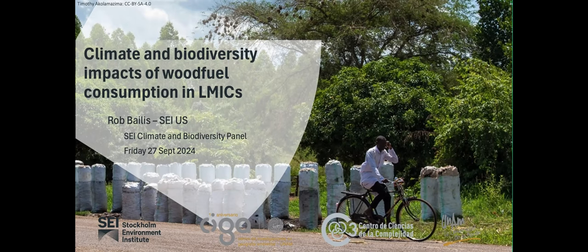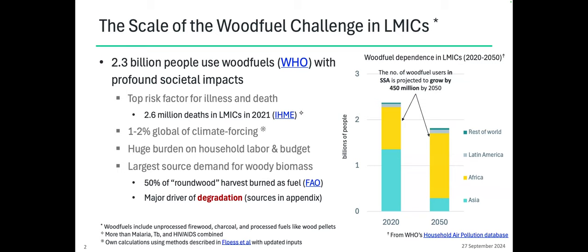I'll give a little bit of background. This is something I'm steeped in, but I know not everybody thinks about this every day. I'll go through some background information, talk about the scale of the wood fuel challenge in low and middle income countries, and then go into how this relates to climate change, land degradation, and impacts on biodiversity. Globally, throughout all low and middle income countries, about 2.3 billion people use wood fuels, and this has profound impact on society in many ways. When I say wood fuels, I mean people using unprocessed firewood, using charcoal — which is carbonized wood — and then to a much lesser extent, people using processed fuels like wood pellets.